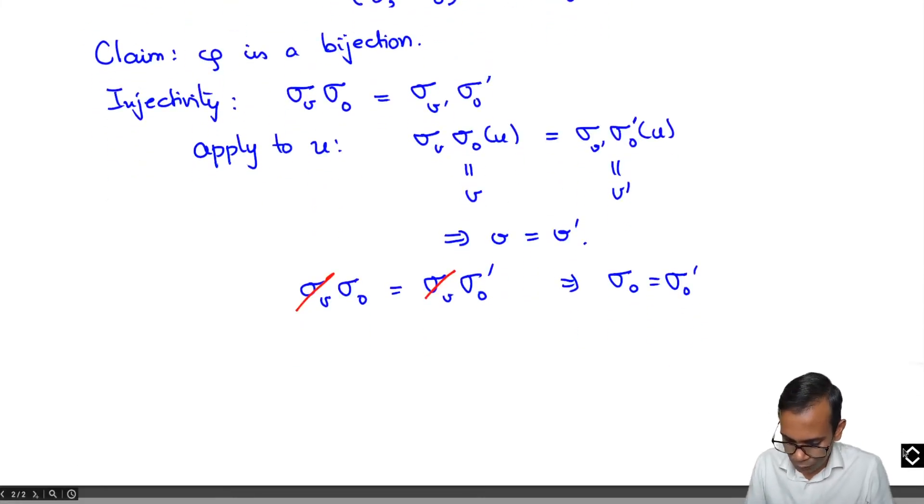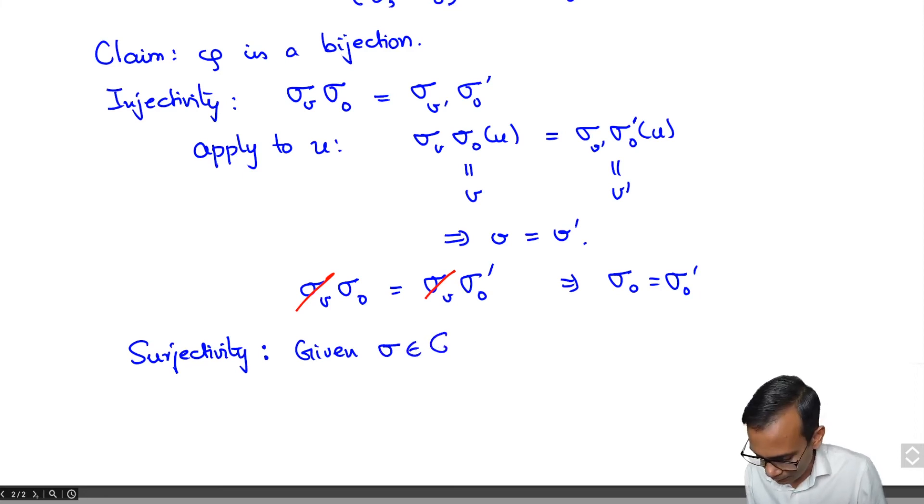Now let us prove the surjectivity. So given any arbitrary sigma, let us try to find V and sigma 0 to show that it is in the image. So the V is easy to guess. Let V be just sigma of U.